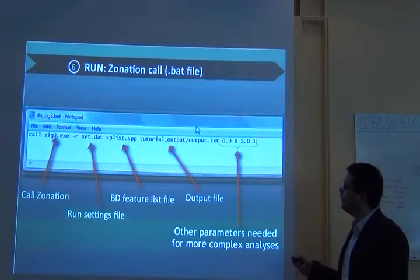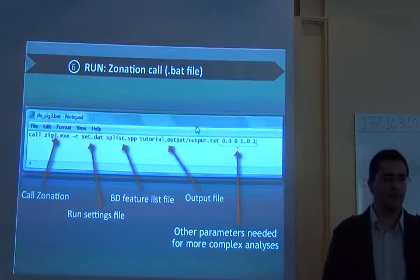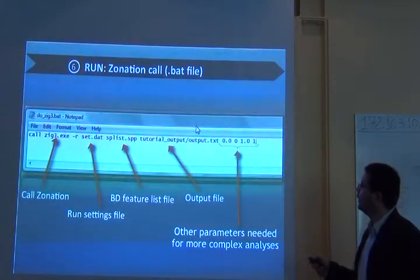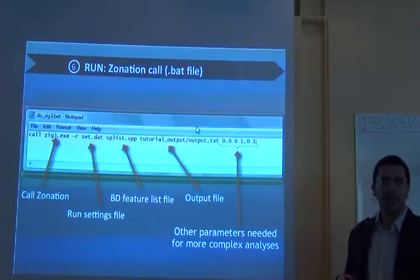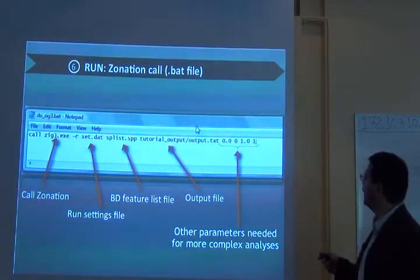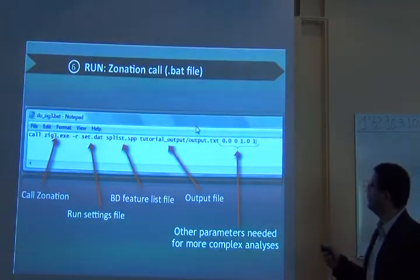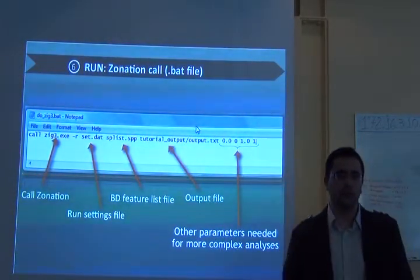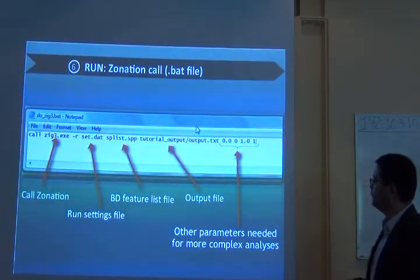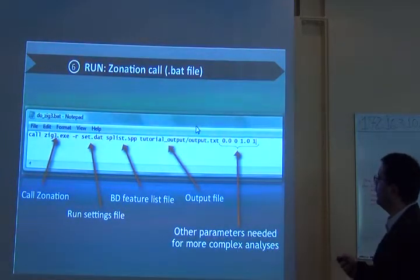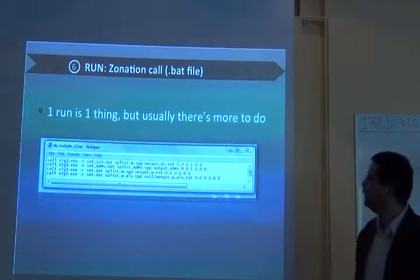So here you say the name of the run settings file, that .dat file with all the parameters of the analysis. The name of the species list file, where the biodiversity feature list is. A name for an output file could be any name. And some other parameters needed for the analysis. Like if you're trying to get clumped solutions for your network. This is actually a command line in zonation. You need that file.